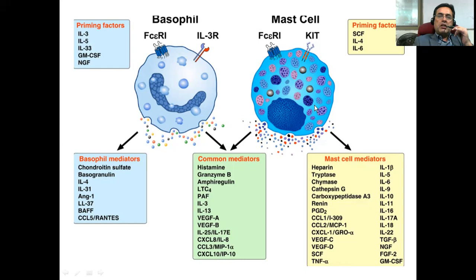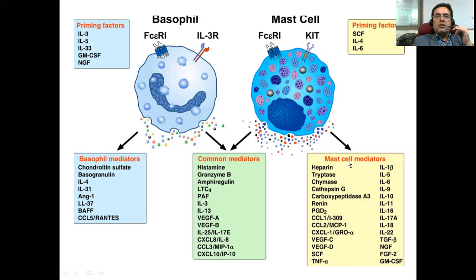The granules of mast cells also contain histamine, granzyme B, and other factors, cytokines, and growth factors, while the basophil-specific mediators are different. So there is a difference in the chemical mediators — although some are common, some mediators are specific to either mast cells or the basophils.